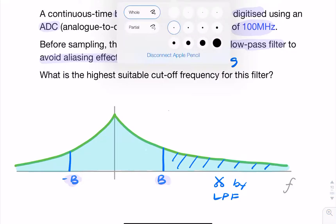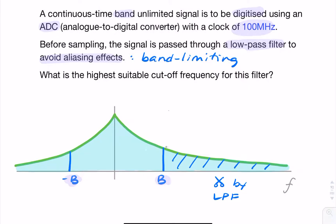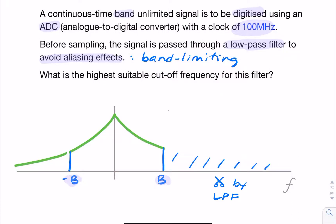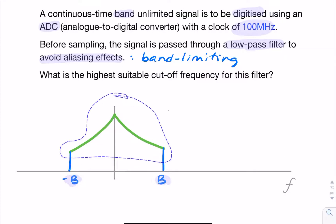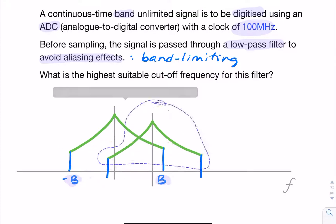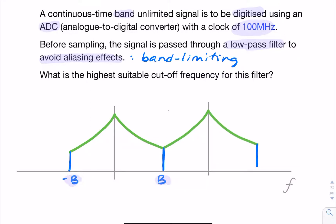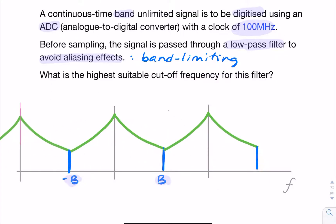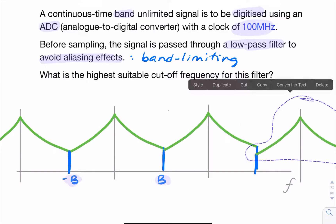So what does that actually do? The spectrum now looks band limited after we erase everything beyond B. After sampling, we're going to have spectral replicas — this replicating both in the negative and positive frequency directions, infinitely — but we make sure it's critical sampling.